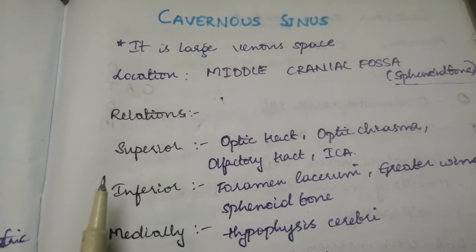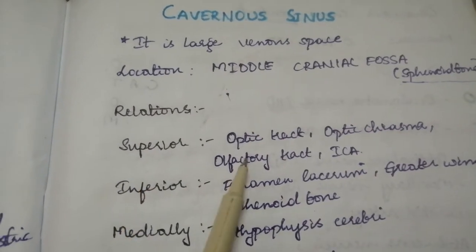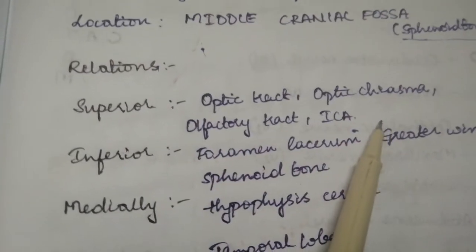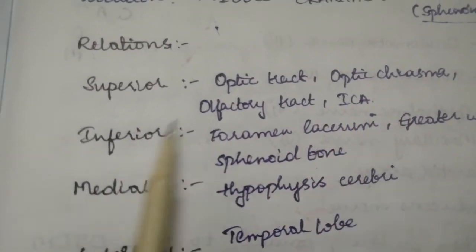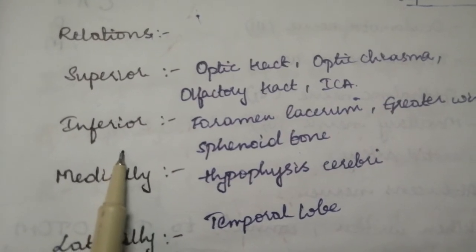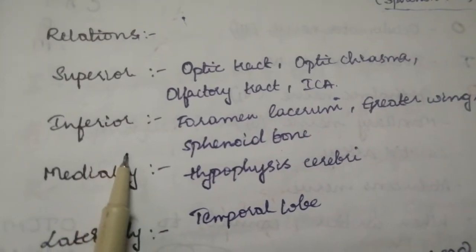When coming to relations, superiorly it has optic tract, optic chiasma, olfactory tract and your internal carotid artery. Inferiorly it has foramen lacerum and greater wing of sphenoid bone.